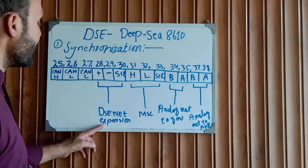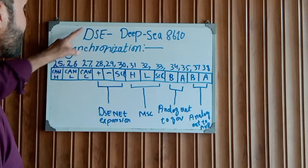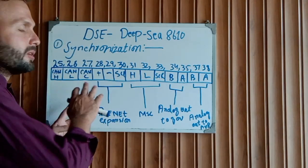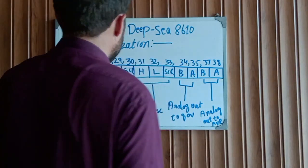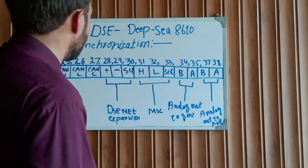This is the DSE net expansion. This controller is controlled by the GSM system. Let's move to explain another connection of this controller.